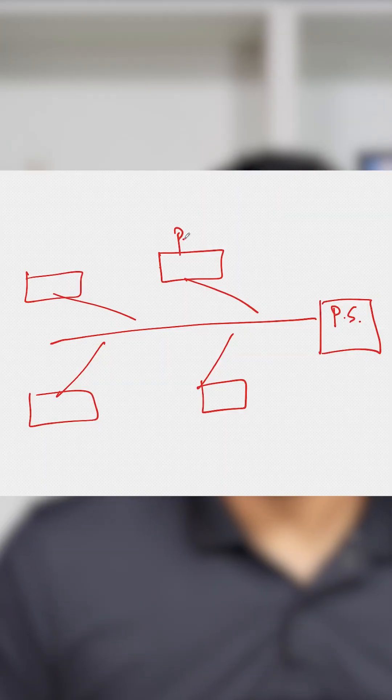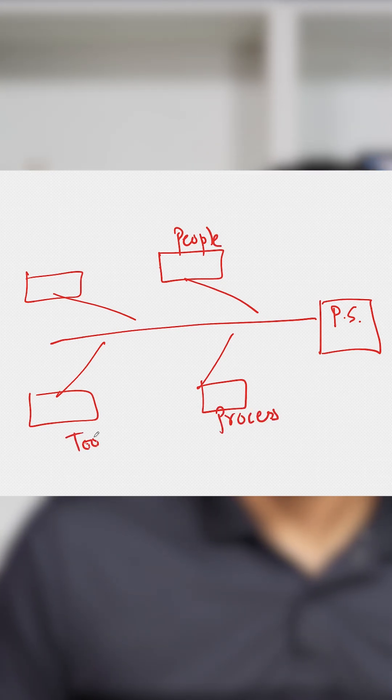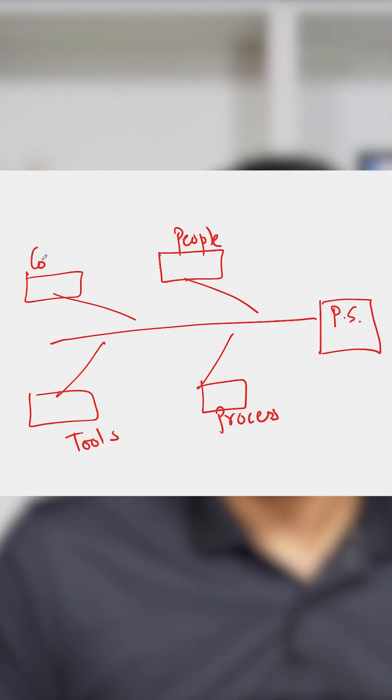Based on that category, for example, if the deadline was missed, my categories could be people, it could be process, it could be tools, it could be communication. Sit with your team — don't try to create a lot of categories, but the most important categories would automatically come through that discussion. Put those categories.